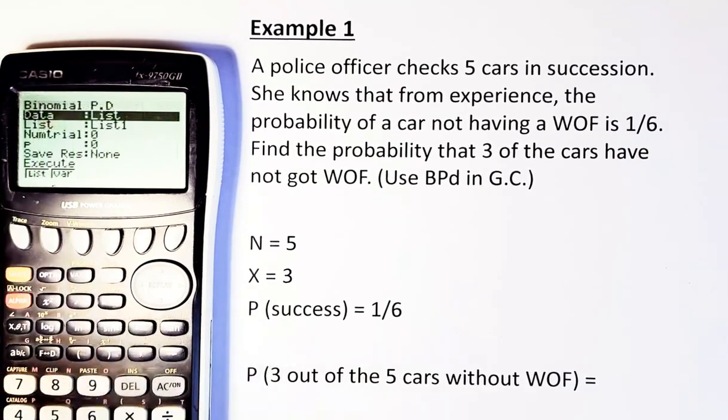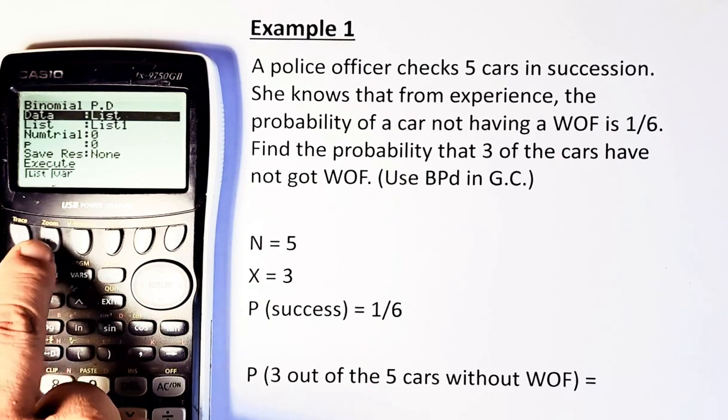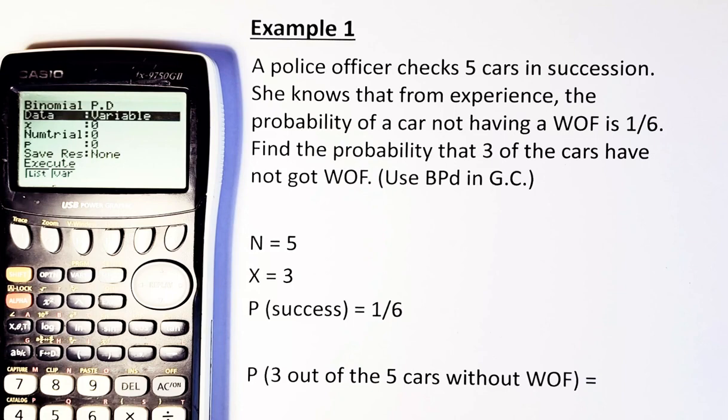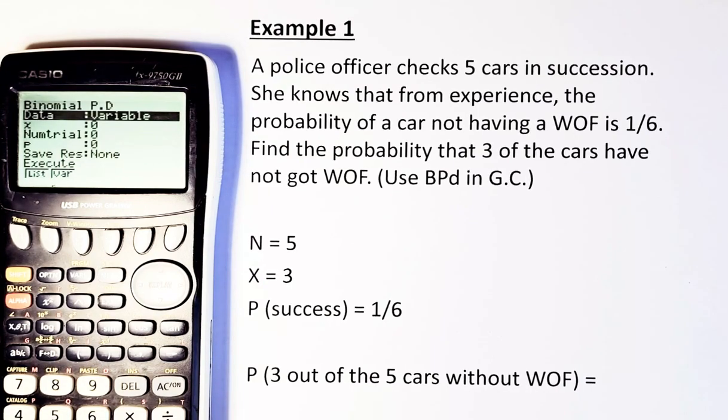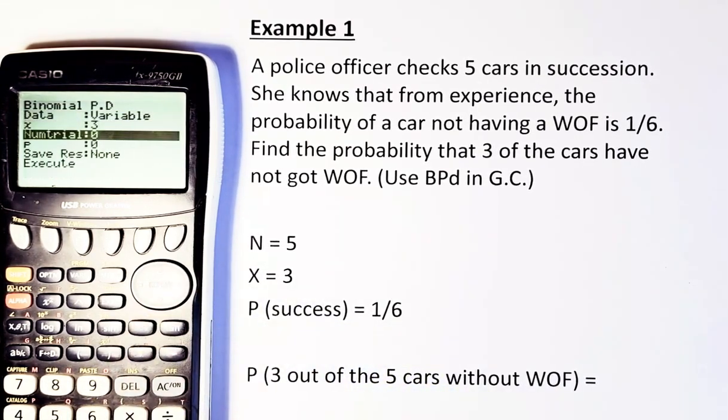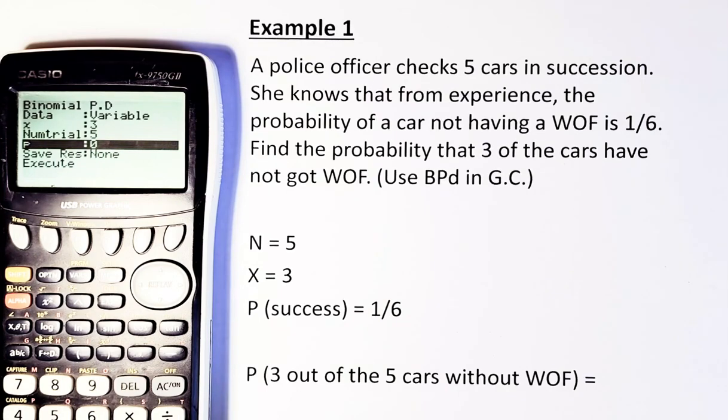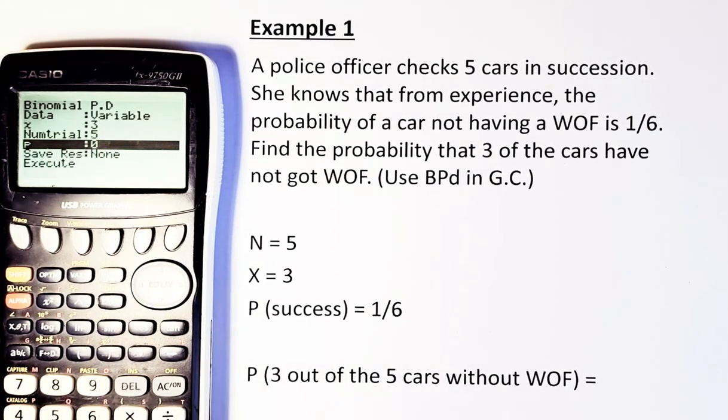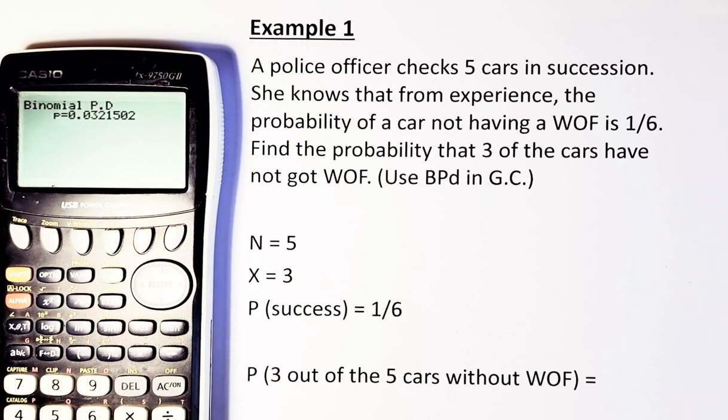So now you are going to press F1, BPD, and the screen will appear. Remember, whenever you do statistics, you always have to calculate in terms of variable. So you must change to variable, F2. Now you just key in the data. X is the probability, so X is 3. Once you enter, press 3 and execute. Number of trials is 5, key in 5, and execute. And then followed by success. 1 out of 6, so you put 1 divided by 6. There is the fraction, execute, and execute. And the answer is going to be 0.0321. So the answer is 0.0321, and that will be achieved in NCEA Level 3.